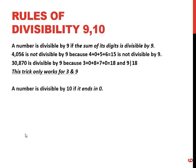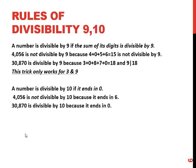And finally a number is divisible by 10 if it ends in a 0, and 4,056 is not divisible by 10 but 30,870 is.